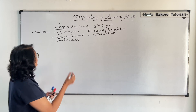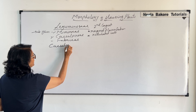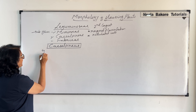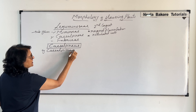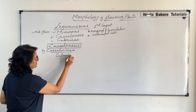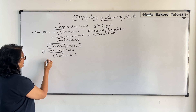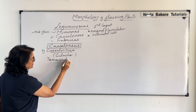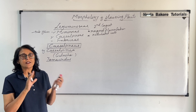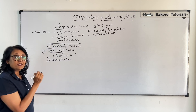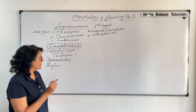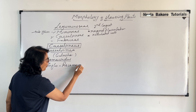Caesalpiniae is our next sub-family. We will write the examples first. It is commonly known as gulmohor. The second example is Tamarindus, that is tamarind. Examples help us get an idea of what kind of plant it is. The inflorescence is mostly raceme or compound raceme — you must have seen the gulmohor flowers arranged this way.